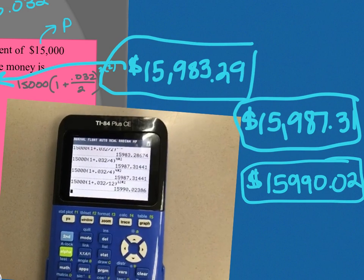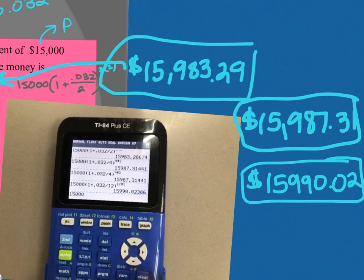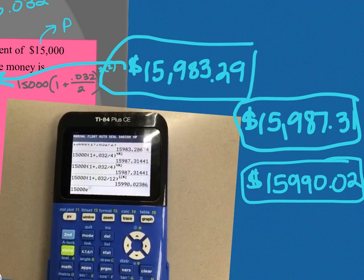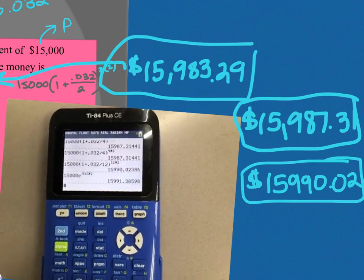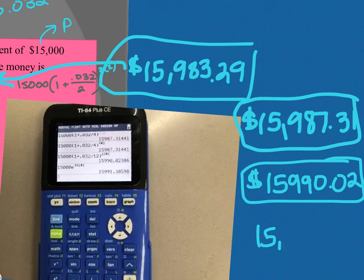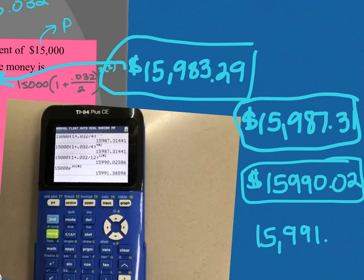And then D is PERT, so $15,000 times E to the R, $0.32 times T, which is 2, and I get $15,991.39.